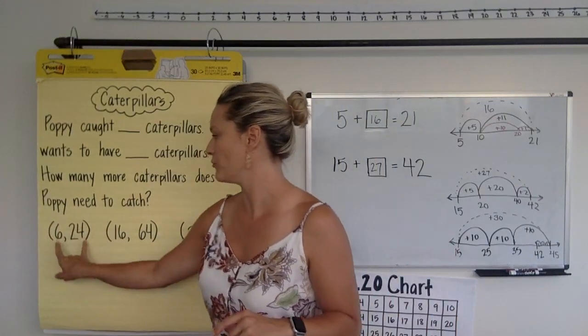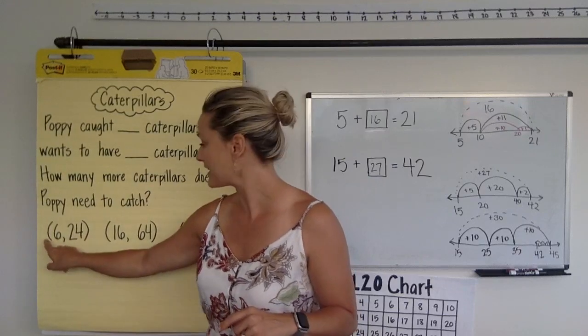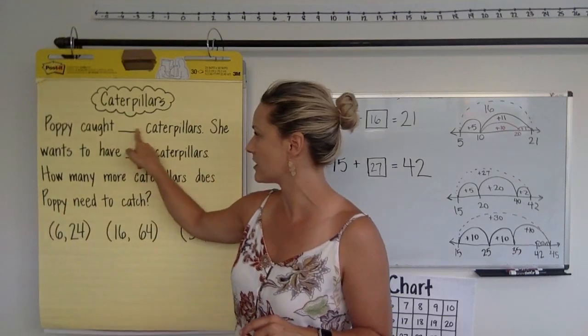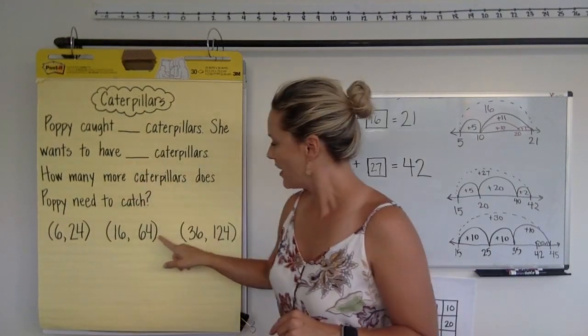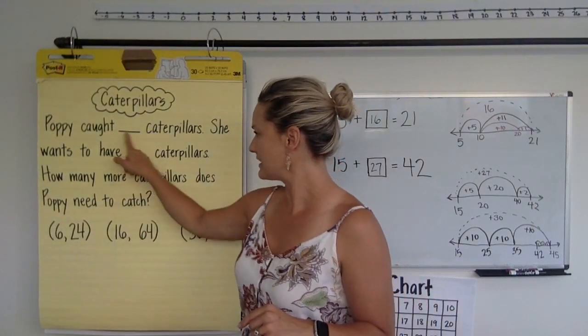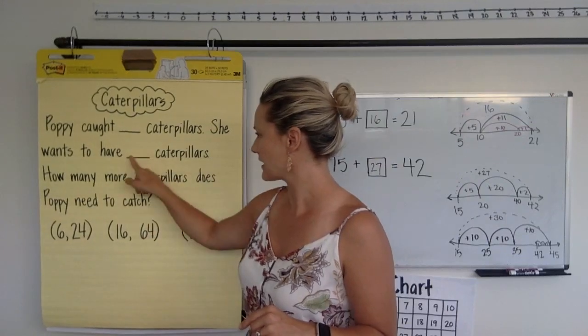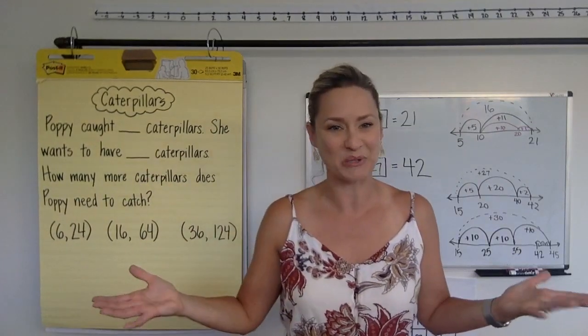So, here are three number set options. If you choose this number set, you must choose the 6 and the 24. And the 6 is the first number. It goes on the first line. The 24 is the second number. It goes on the second line. Or you could pick 16, and 16 would go on the first line. 64 would go on the second line. And so on.